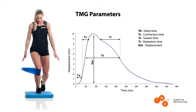TMG parameters: TD, delay time — the time between 0% and 10% of the maximal amplitude of muscle response. TC, contraction time — the time between 10% and 90% of DM. The correlation between this parameter and the percentage of type 1 muscle fibers is statistically significant.